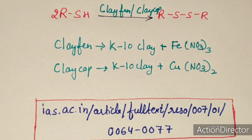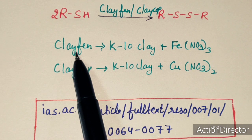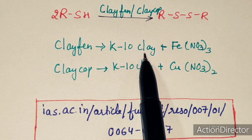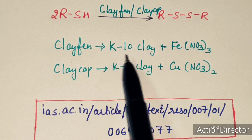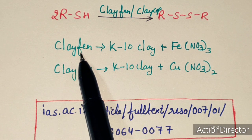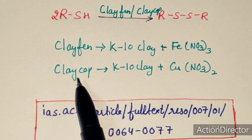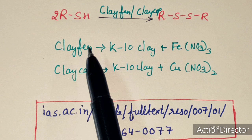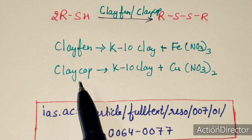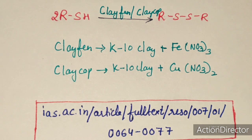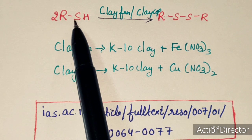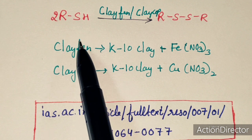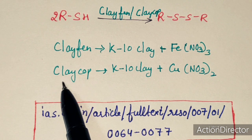Clay-Fen is K10 clay treated with ferric nitrate, and clay-Cop is K10 clay treated with copper nitrate. These are excellent oxidizing agents for alcohols and thio compounds. In the presence of these clays, thio compounds and alcohols can be easily oxidized, making them very useful oxidizing agents.